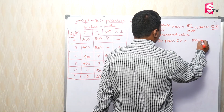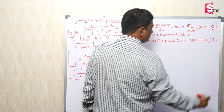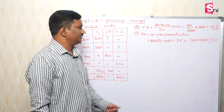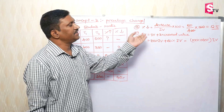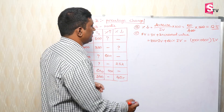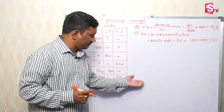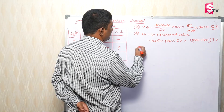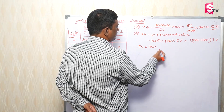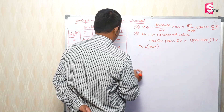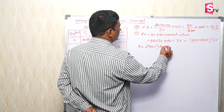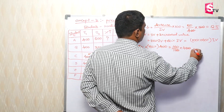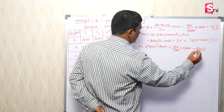100% plus 60% into initial value gives the final value. So final value equals 160% of initial value. Initial value is 400. So: 160 divided by 100, into 400 equals 640. The final value is 640.